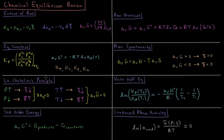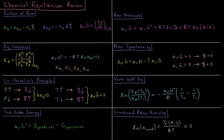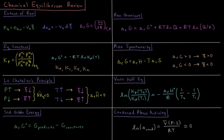We explore Le Chatelier's principle, where the system will respond to some external perturbation so as to minimize the effect of that perturbation. If we have a system where the number of gas moles decreases in the products relative to the reactants, if we increase the pressure, we want to decrease the pressure, so the extent of reaction is going to go backwards to consume some moles of gas. If the pressure goes down, the opposite happens. For an exothermic reaction where we release heat to the surroundings, if the temperature goes up, the extent of reaction goes down so we consume heat. If the temperature goes down, we go forward in the reaction to produce heat. In each case, the effect is designed to minimize the external environmental perturbation.